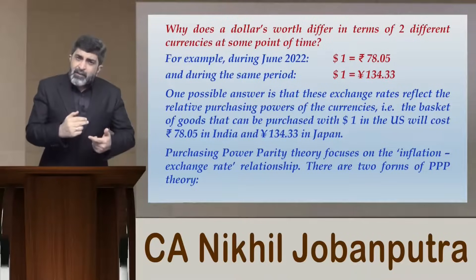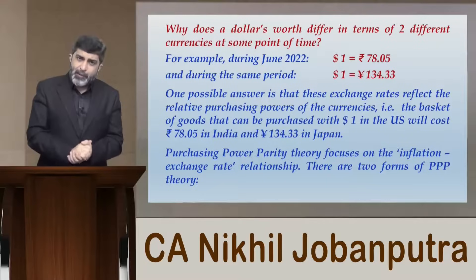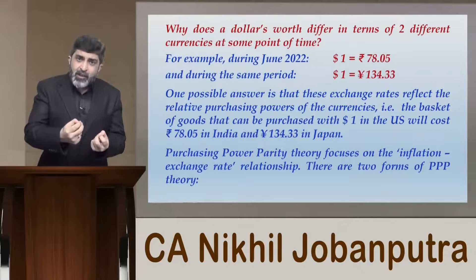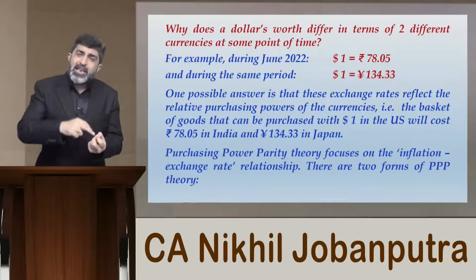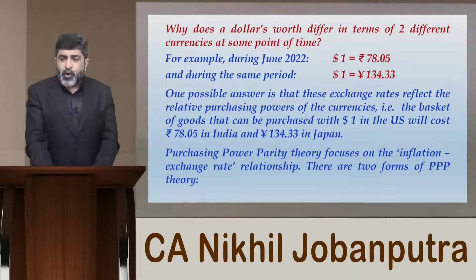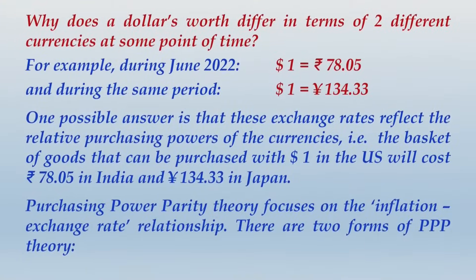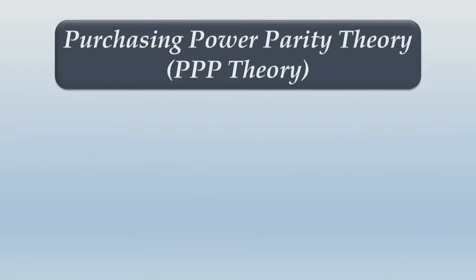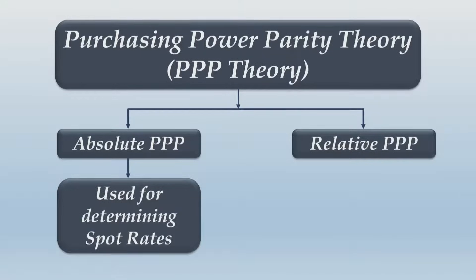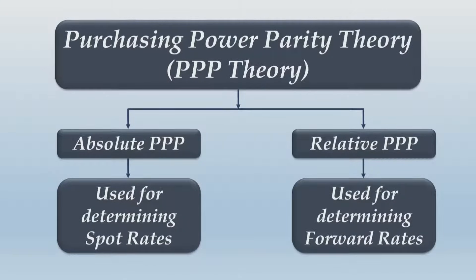When we talk about the relative form of purchasing power parity, inflation rates are used to arrive at a forward rate of one currency in terms of the other. Absolute PPP is used for determining spot rates, whereas relative PPP is used for determining forward rates. Absolute purchasing power parity can be better understood with reference to the Big Mac Index — a price index published by The Economist, a British weekly newspaper — as an informal way of measuring purchasing power parity between two currencies, and it provides a test of the extent to which market exchange rates result in goods costing the same in different countries.